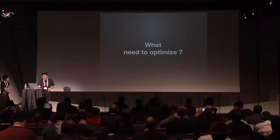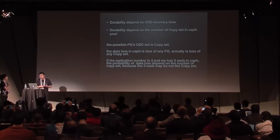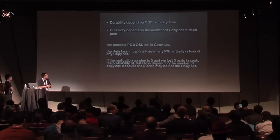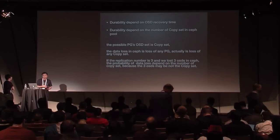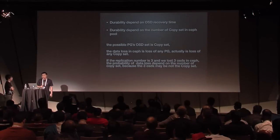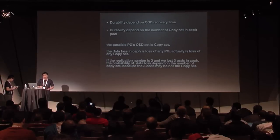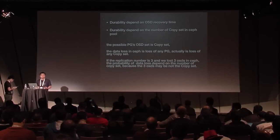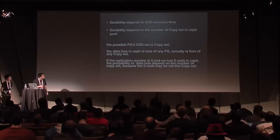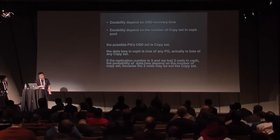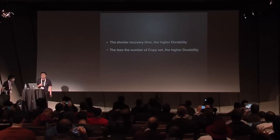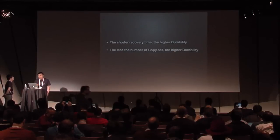Two conclusions from the Ceph reliability model: first, durability depends on OSD recovery time; second, durability depends on the number of copy sets in the Ceph pool. A copy set is the possible OSD set of a PG. Data loss in Ceph means the loss of any copy set. If the replication number is 3 and we lose 3 OSDs, the probability of data loss depends on the number of copy sets. Therefore, shorter recovery time means higher durability, and fewer copy sets means higher durability.